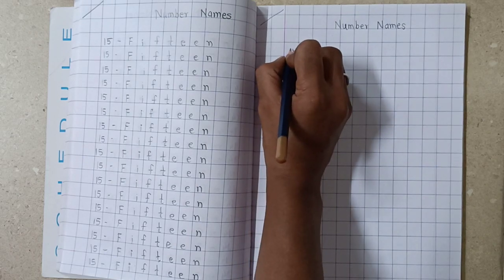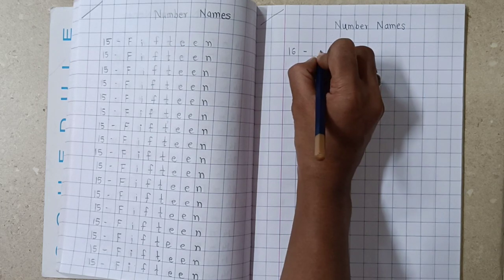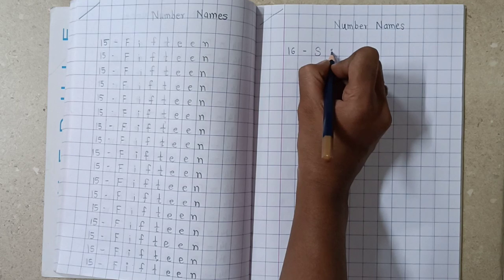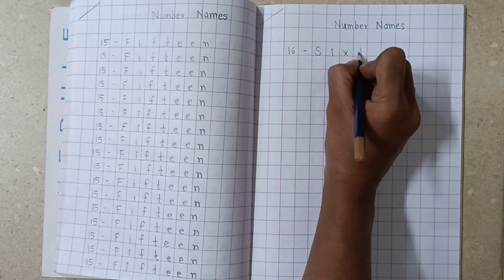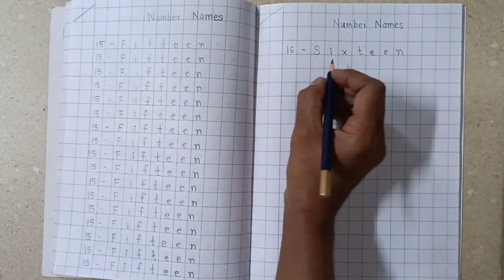Then, write number 16 here. 1-6, 16, what is the number name of 16? S-I-X-T-E-E-N, 16, okay?